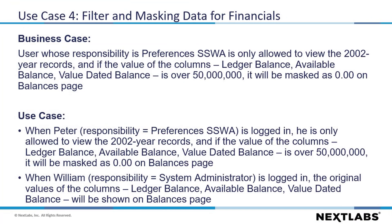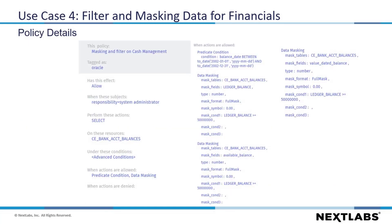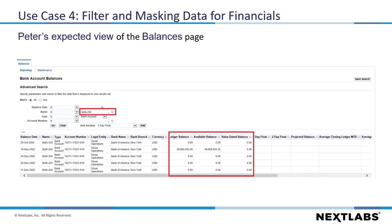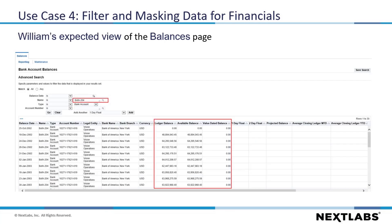In the fourth use case, we will cover how to filter and mask financial data based on policy. For this use case, if the user's responsibility is Preferences SSWA, he will only be allowed to view the 2002 year records, and the columns Ledger Balance, Available Balance, and Value Dated Balance will be masked as zero if the value is over 50 million on the balances page. The users Peter and William will be used in this use case. Before we move into the demo, let's review the policy details and expected results. These are the policy details. Here is the expected cash management view for Peter. This is the expected cash management view for William.